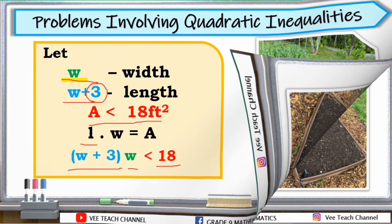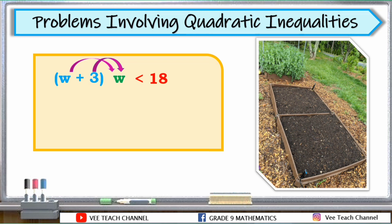We can simplify this inequality. We will apply the distributive property. We will distribute W to each term of our binomial. So W times W, then 3 times W is less than 18. So what is the answer? W times W? The answer is W squared. And 3 times W, we have 3W, then copy less than 18. We add negative 18 to both sides to make this 0, to make the other side 0. And we have now the final inequality: W squared plus 3W minus 18 is less than 0. This is now our quadratic inequality.